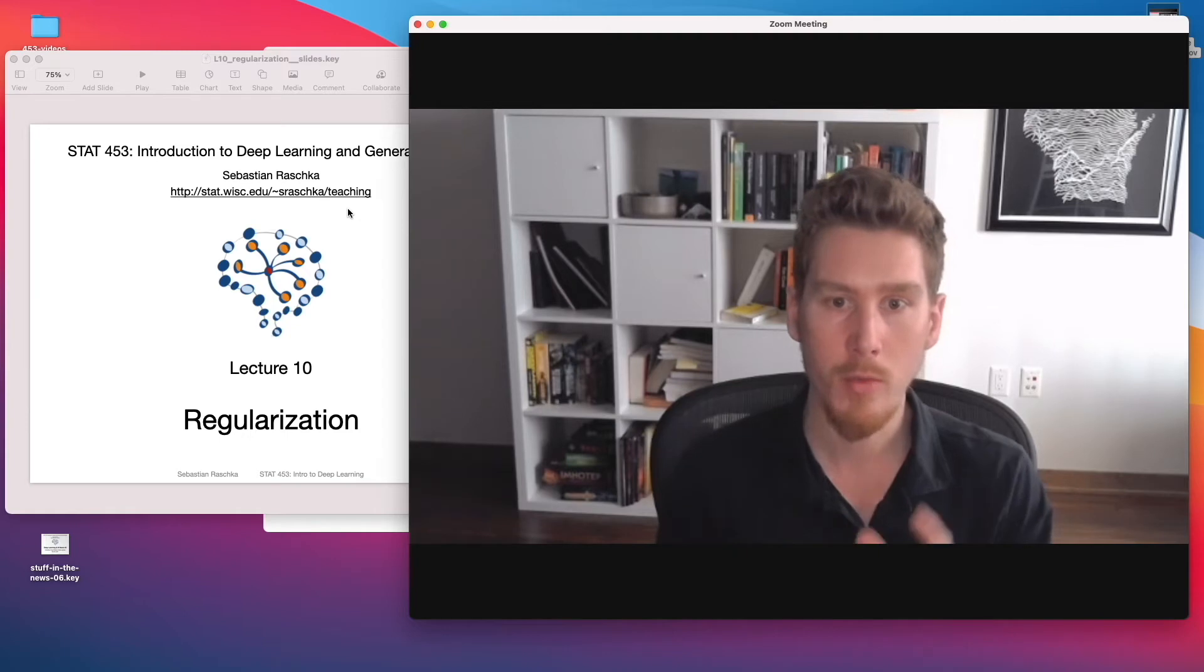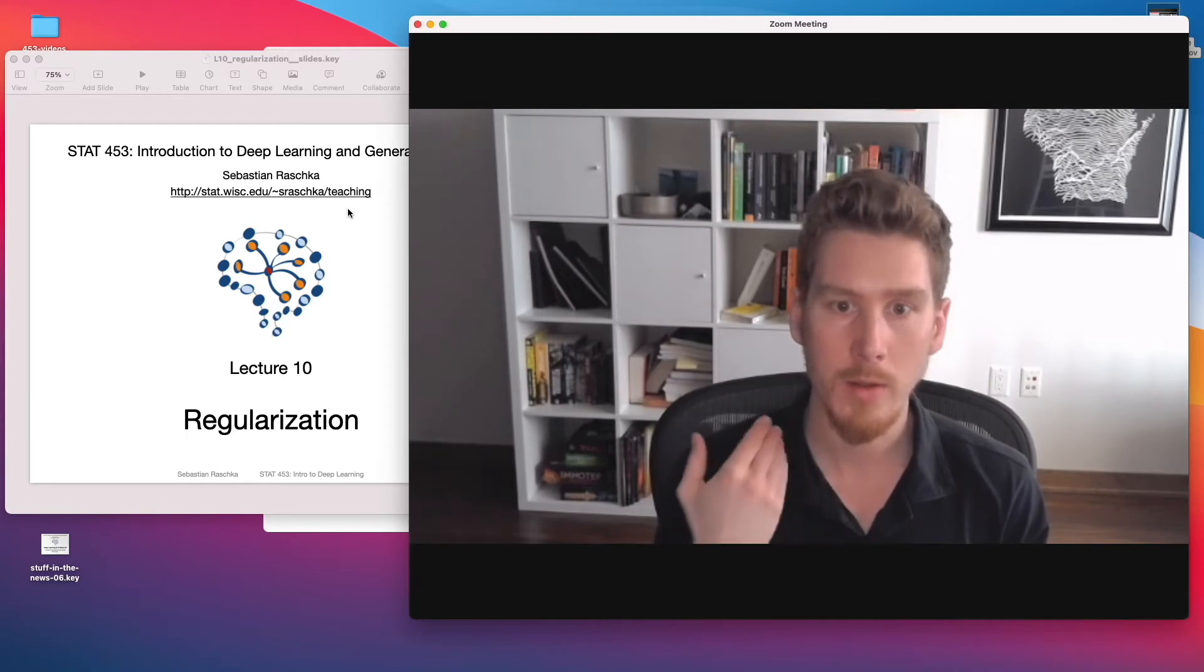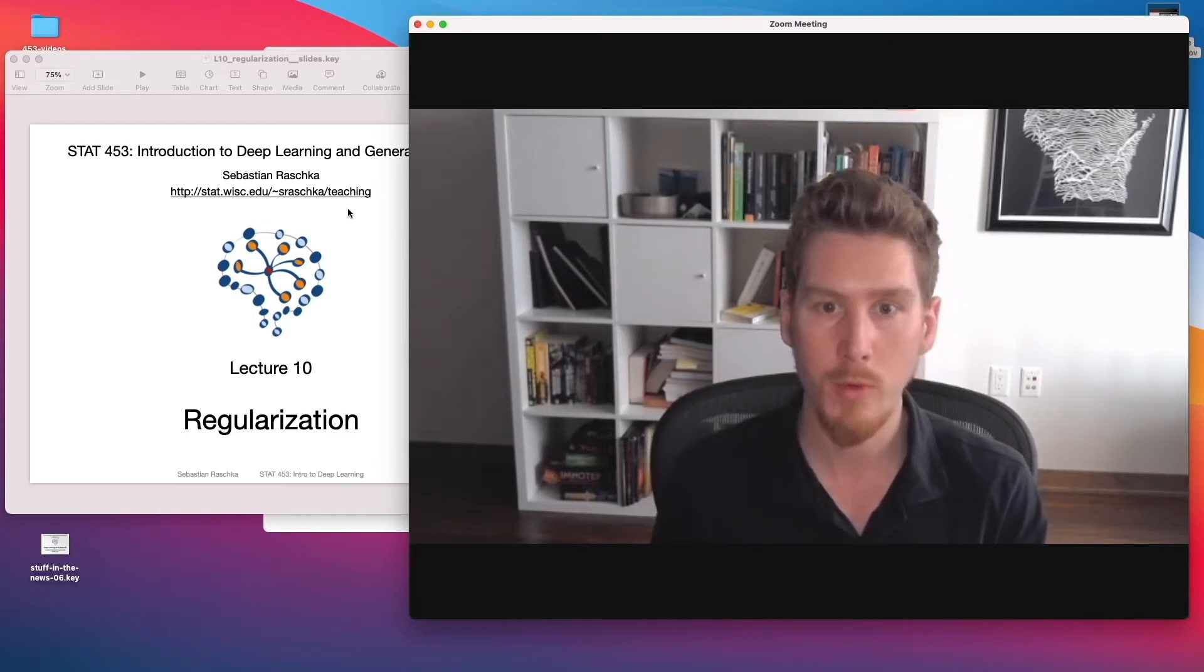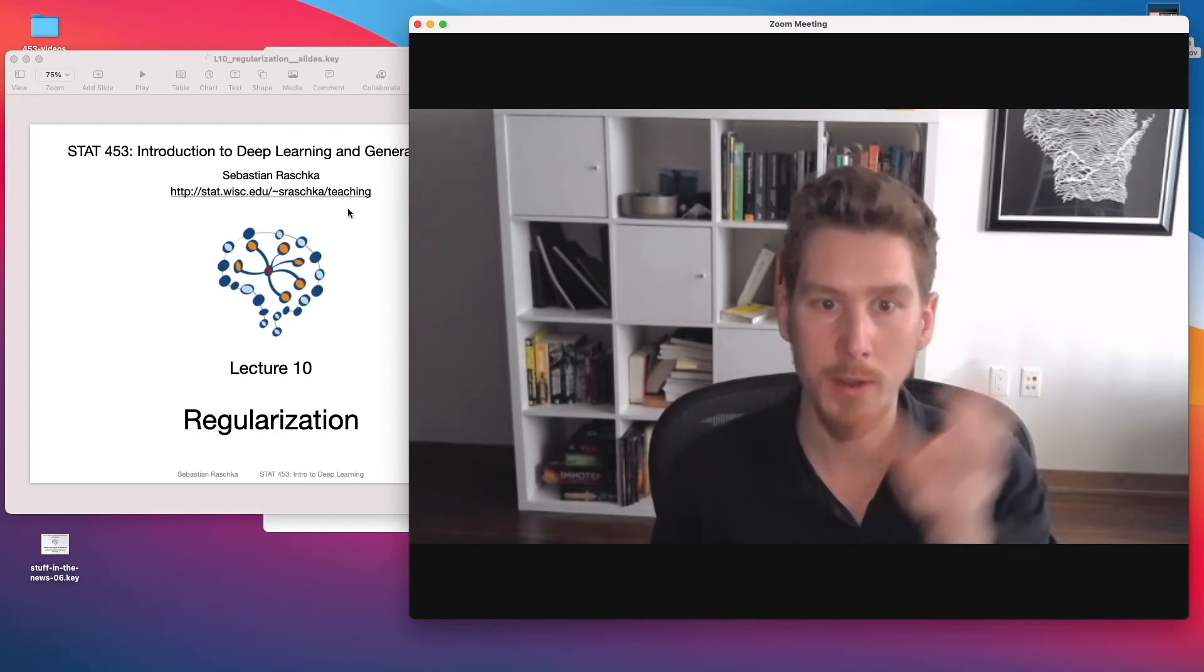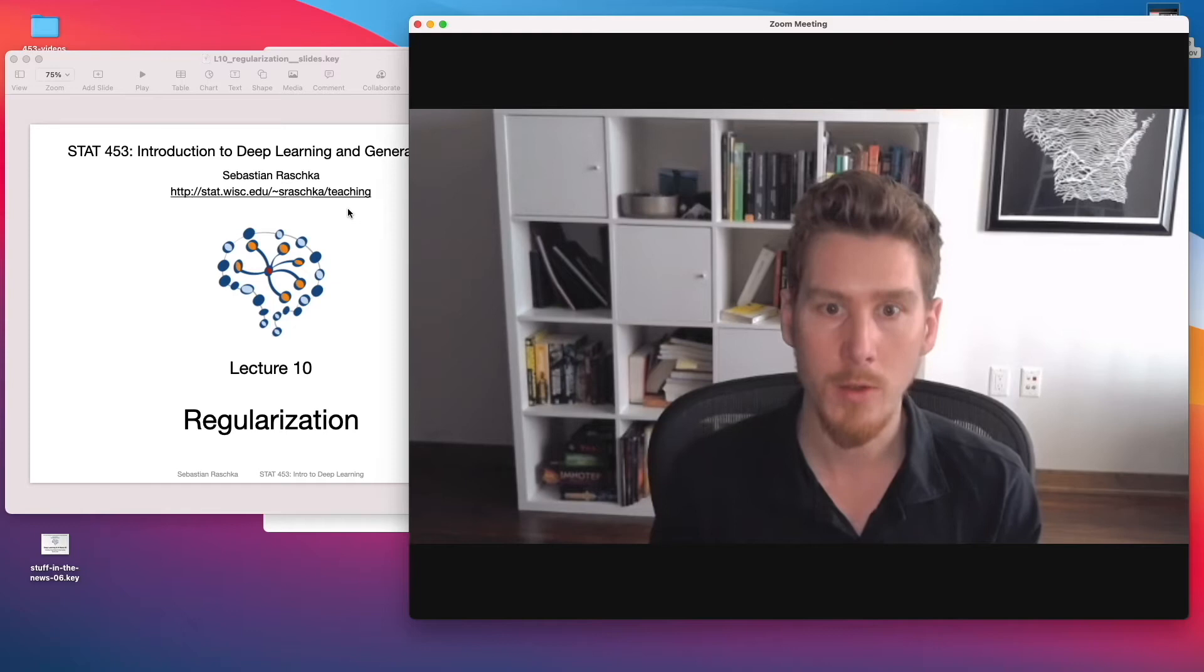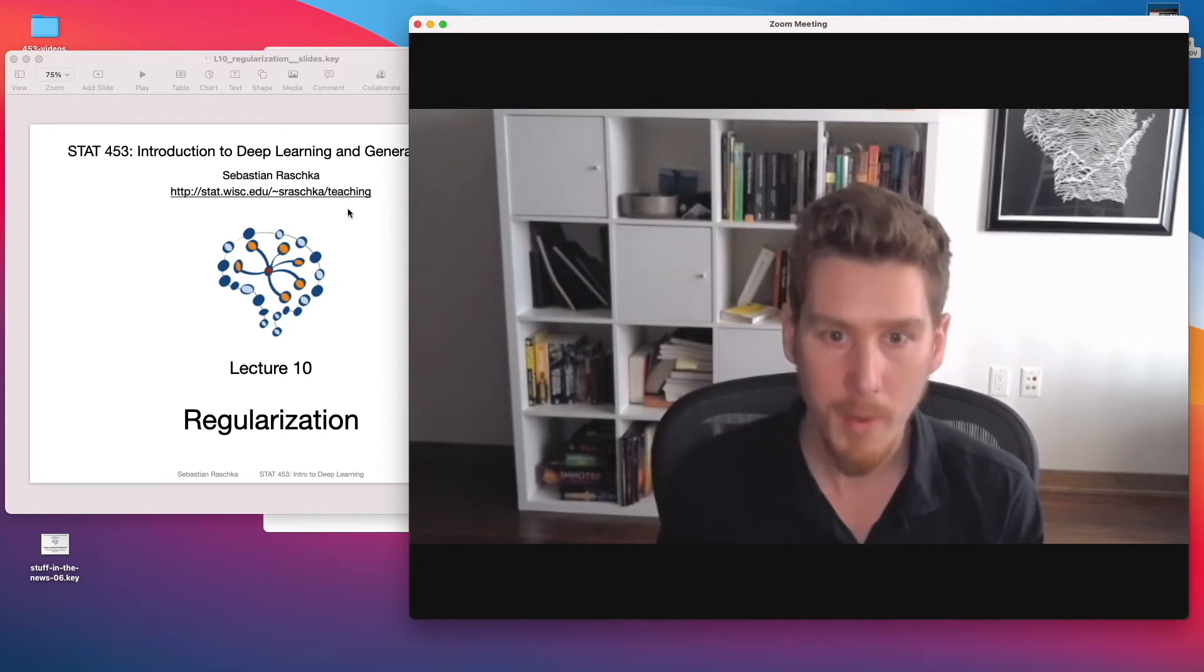So dropout - we randomly drop units in a neural network, in the hidden layers. And with that, we help prevent the network from becoming too reliant on particular neurons. By randomly dropping some neurons during training, the network will learn to use other neurons or to not rely on particular neurons so much. And that also helps with making the network more robust.